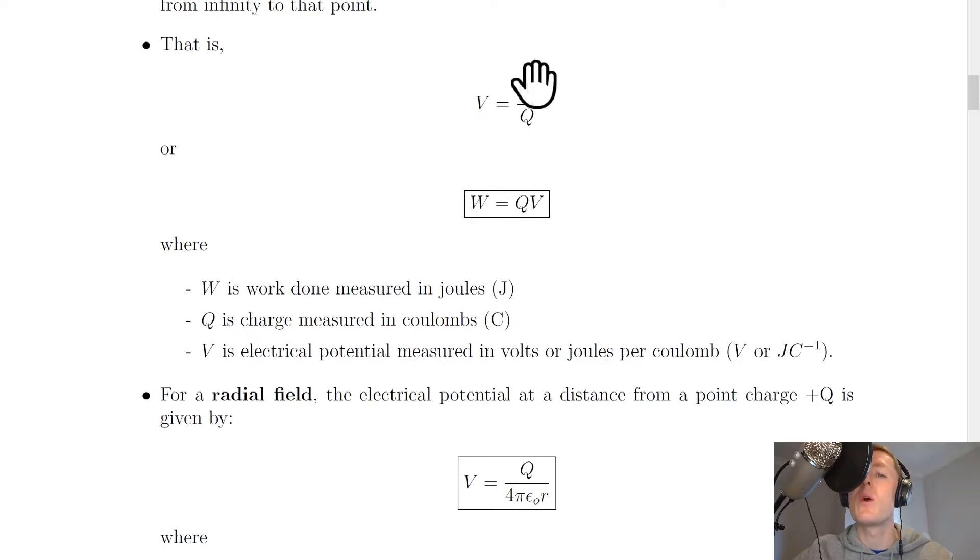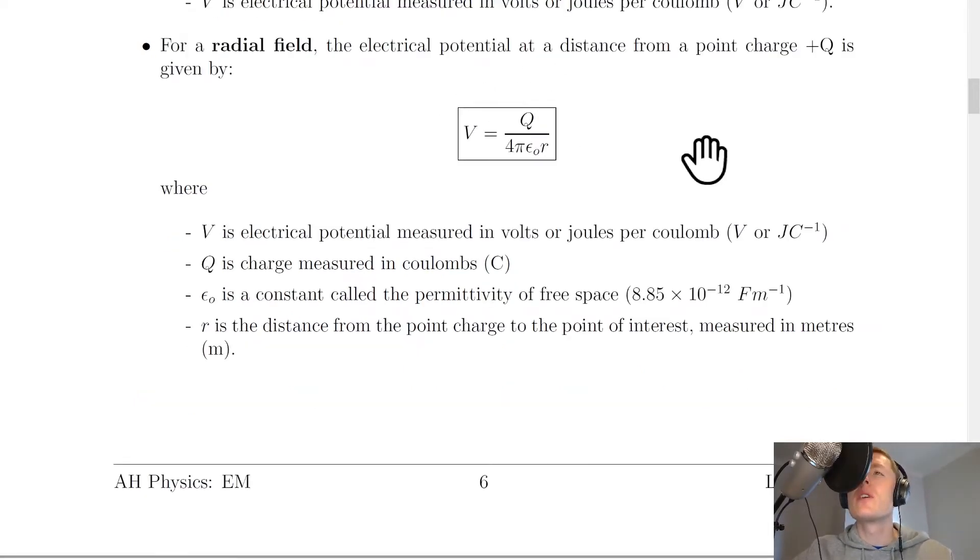It goes on to say that for a radial field, the electrical potential at a distance from a point charge plus Q is given by this expression here. V equals Q over 4 pi epsilon naught R. Where V is electrical potential measured in volts or joules per coulomb. Q is charge measured in coulombs. Epsilon naught is a constant called the permittivity of free space. And we've seen this value before, 8.85 times 10 to the minus 12 farads per metre.